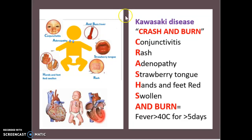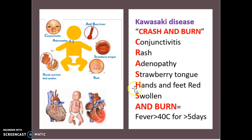When it comes to Kawasaki disease, it is important to remember the term 'CRASH and BURN.' C is for conjunctivitis, R is for rash, A is for adenopathy, S is for strawberry tongue, H is for hands and feet which are red, and S is for swollen — that's CRASH.